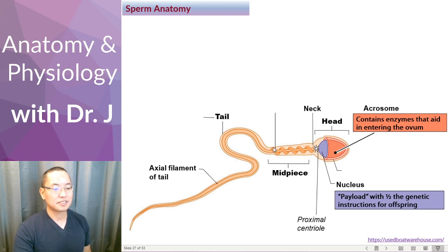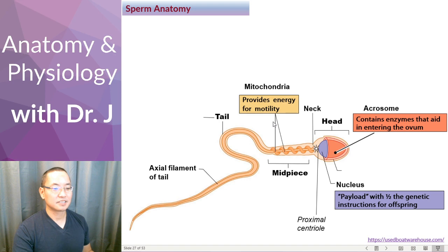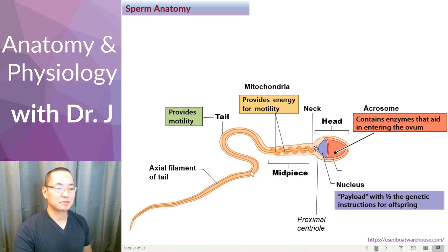In the midpiece, we see this long curly part right here — these are actually mitochondria. Mitochondria are the powerhouse of the cell because they generate all the ATP. You need a lot of chemical energy to provide motility and movement. There are so many mitochondria here, along with proteins that, once you have all this ATP, actually move and rotate the tail to provide motility.